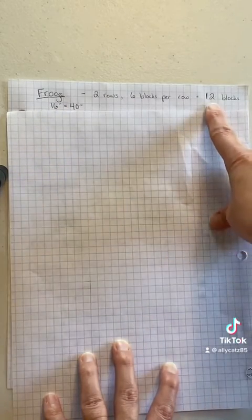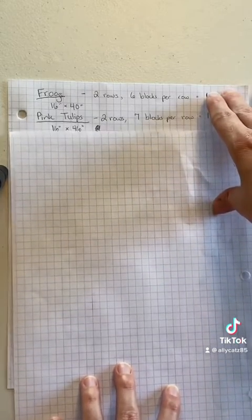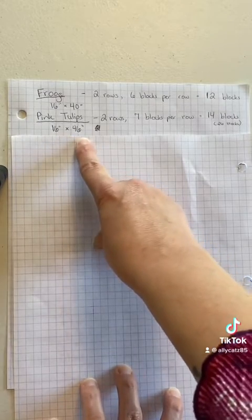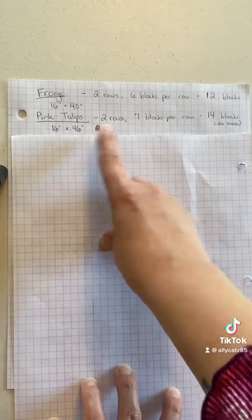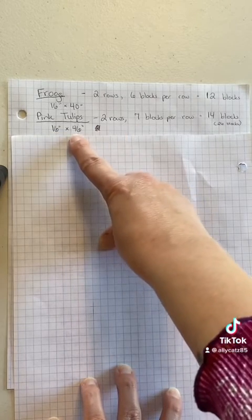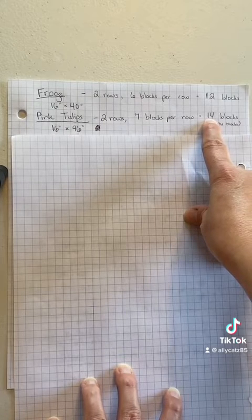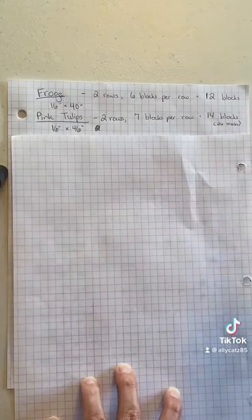For my pink tulips, it's 16 inches by 46. So we know we can get two rows from that 16 inches, and we can get seven blocks per row from that 46. So that will give me 14 blocks out of the pink tulips, which together those will equal 26 blocks.